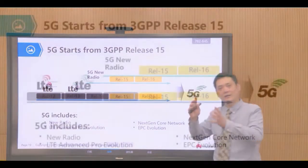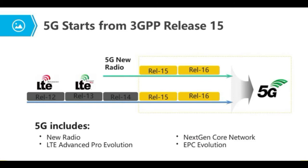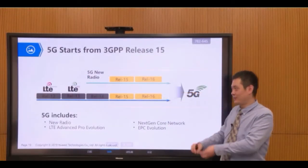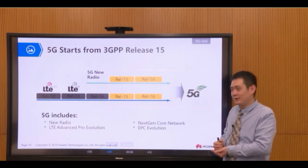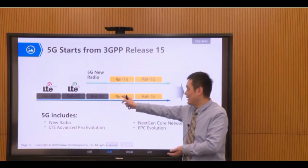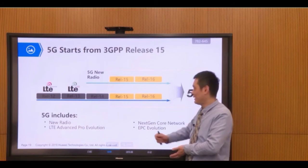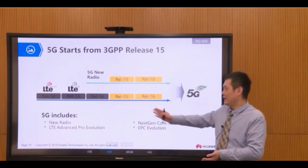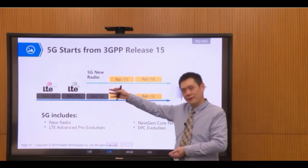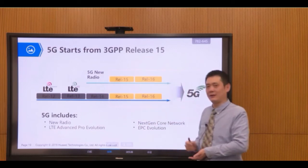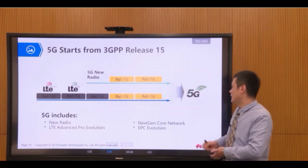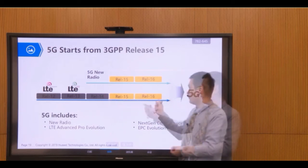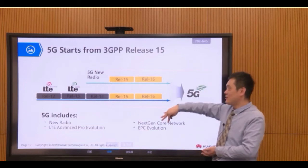We can recall that the ITU-R defined 5G as IMT-2020, and 3GPP realizes this requirement starting from Release 15. We can say Release 15 is 5G, and the previous releases are for 4G, 3G, and 2G. From Release 15 onward it is 5G, and 5G can have two paths for evolution: one is evolving from LTE, and the other is using New Radio technology.